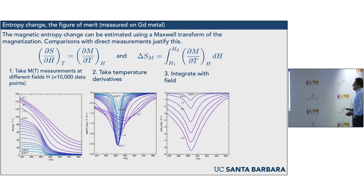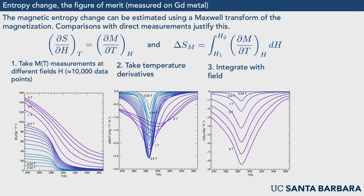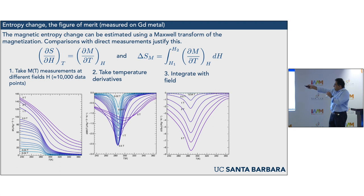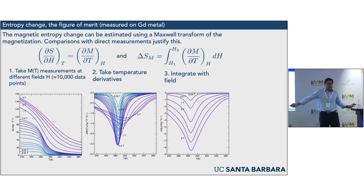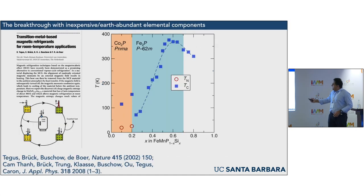The figure of merit in these materials is the entropy change associated with turning on and off a magnetic field. This magnetic entropy change is conveniently estimated using a Maxwell transform of the magnetization, so you don't have to do a calorimetric measurement — a magnetization measurement suffices. The key relation is that δS/δH taken isothermally equals δM/δT taken at constant field. You take many M versus T plots at different fields, take the derivatives, and integrate along the field axis to get the magnetic entropy change as a function of field and temperature.